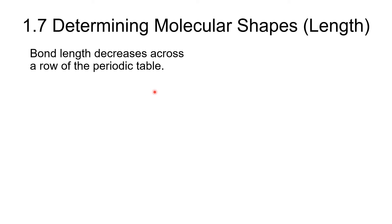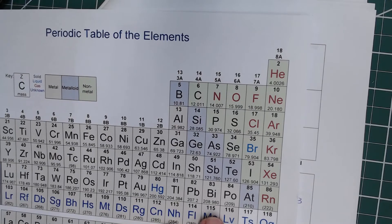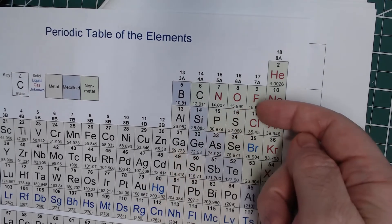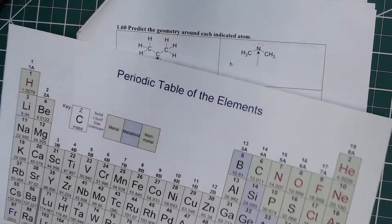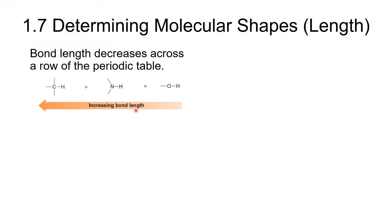There are a couple of trends to pay attention to. If we're bonded to the same atom — in this case hydrogen — we've got C-H, N-H, O-H. The bond length decreases as we go to the right across the periodic table, or increases as you go to the left. This has to do with atomic size caused by increased effective nuclear charge, but the most important thing is that it increases as we go to the left.